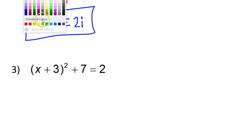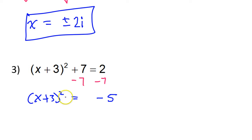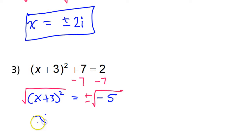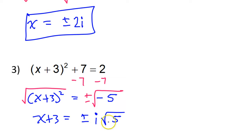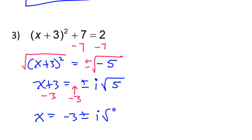Number 3: first, you subtract 7 from both sides. That's going to leave you with x plus 3 squared is equal to negative 5. Now you would use the square root to unsquare both sides — don't forget, this side will be plus or minus. That gives you x plus 3 is equal to plus or minus, and the negative under the radical is an i, so I have i radical 5. Radical 5 cannot be simplified, so leave it alone. Then subtract 3 from both sides and put that in the front. So that gives you x is equal to negative 3 plus or minus i radical 5.